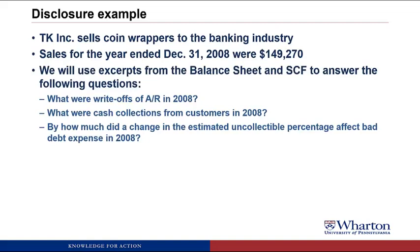We're going to use excerpts from the balance sheet and the statement of cash flows to answer the following questions for TK: What were their write-offs of accounts receivable in 2008? What were cash collections from customers in 2008? And by how much did a change in the estimated uncollectable percentage affect bad debt expense in 2008?